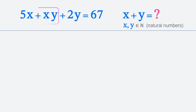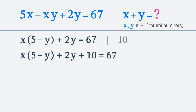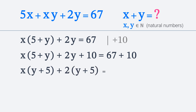We can notice that in the first two terms we can pull out x. So we can rewrite the problem as x times (5 plus y) plus 2y is equal to 67. Now we can notice that we have (5 plus y) and y. As we try to represent this equation as a product of factors, it would be good to have another 5, but we have 2y. So let's add 10 to both sides of the equation. Now we have x times (5 plus y) plus 2y plus 10 is equal to 77. We can factor out (y plus 5), and we get (y plus 5) times (x plus 2) is equal to 77.